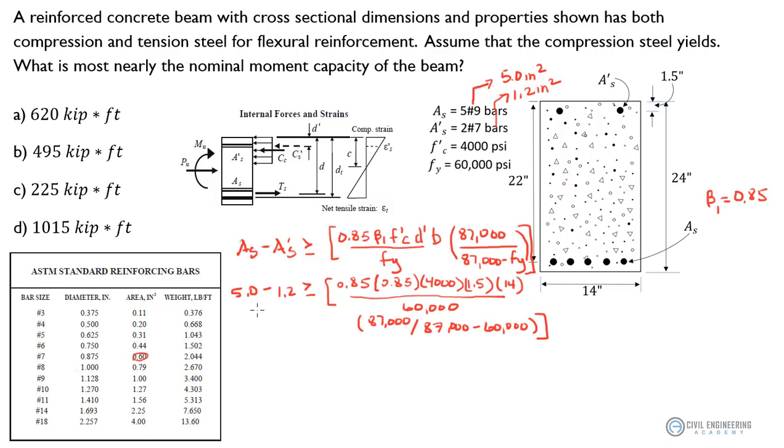So if we crank through that, this side of the inequality, we're going to have 5.0 minus 1.2. We're going to have 3.8 inches squared. And that's got to be greater than or equal to, and if we crank through this, we should get 3.25 inches squared. And so since the difference between our tension and compression steel is 3.8, and that's greater than or equal to 3.25 inches squared, we've just verified that our compression steel indeed does yield. So that's a good thing.